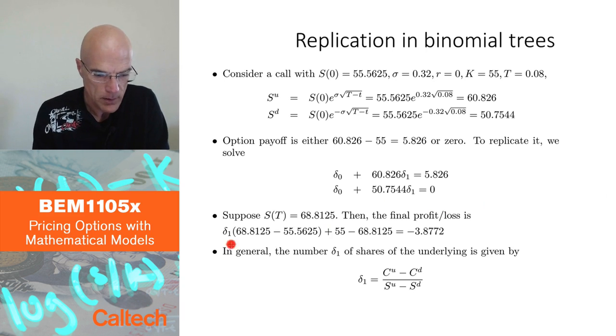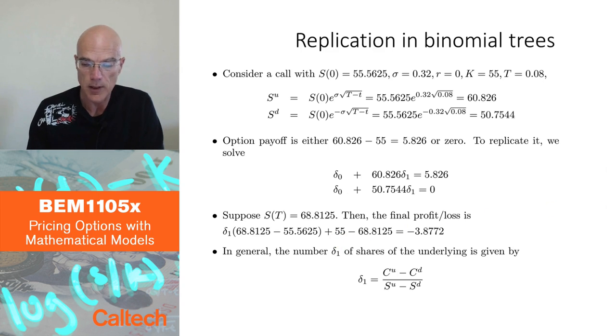What is your final profit loss if you do this? Well, from your hedging strategy, you will have the money that you will make is the number of shares in the stock that you have times the change in the stock price. And this is the change in the stock price. You would get $55 for the option at the end because it will be exercised in the money, and you have to pay the stock, which really means you're paying 68.81.